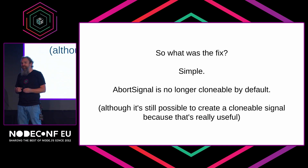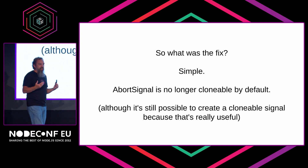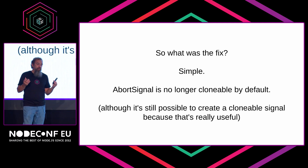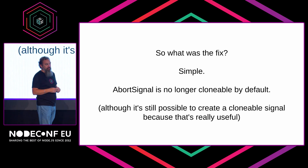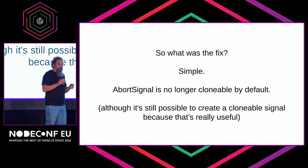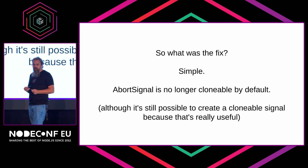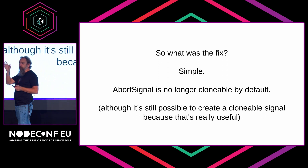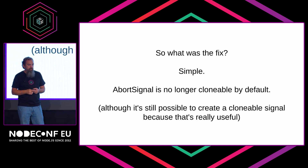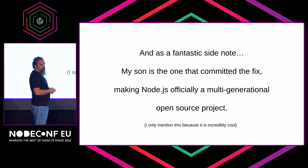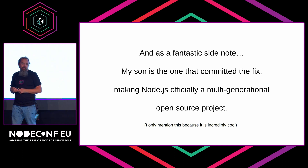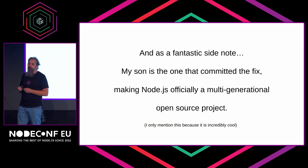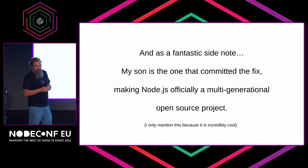The fix was simple: we just stopped doing it. We simply made it so AbortSignal was no longer clonable by default. It's still useful, so there are new APIs to make it clonable when needed. Technically it was a breaking change, but we skirted around that by the fact that this was all experimental code. Just by removing this one little experimental hack, we were able to boost the performance of fetch in general significantly. And this is the part I love the most — my son is the one who actually landed the pull request for the fix. Node is officially a multi-generational project, and I'm super proud about this.